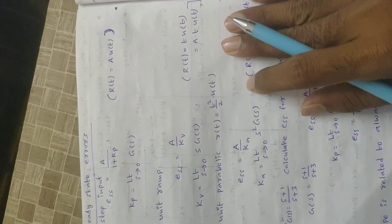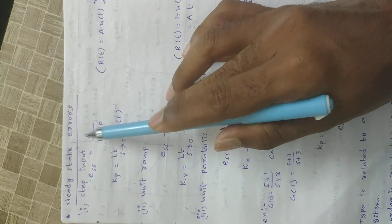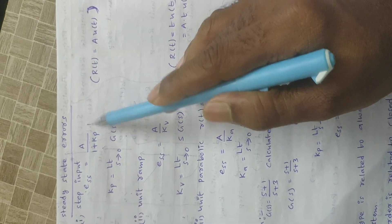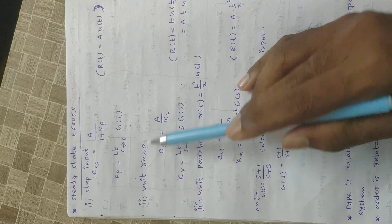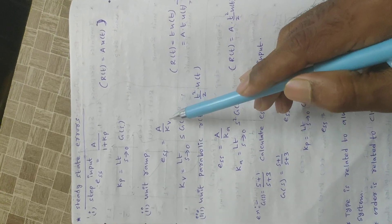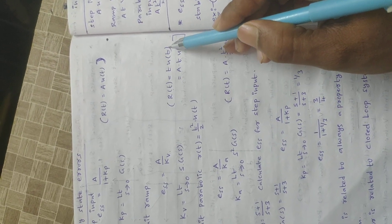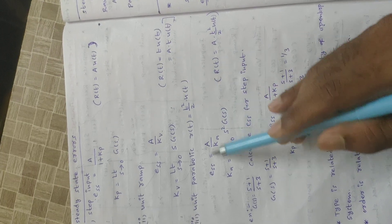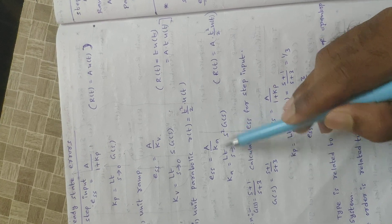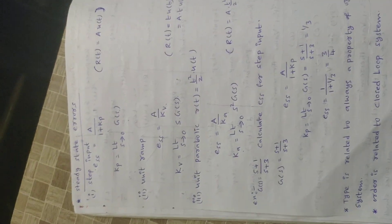The following steady-state error formulas are important. For a step input a into u of t, the steady-state error ess equals a by 1 plus Kp, where the position coefficient Kp equals the limit as s tends to 0 of G of s. For a ramp input a into t into u of t, ess equals a by Kv, where the velocity coefficient Kv equals the limit as s tends to 0 of s into G of s. For a parabolic input t squared by 2 into u of t, ess equals a by Ka, where the acceleration coefficient Ka equals the limit as s tends to 0 of s squared into G of s.